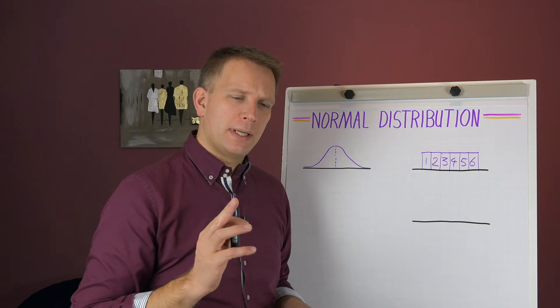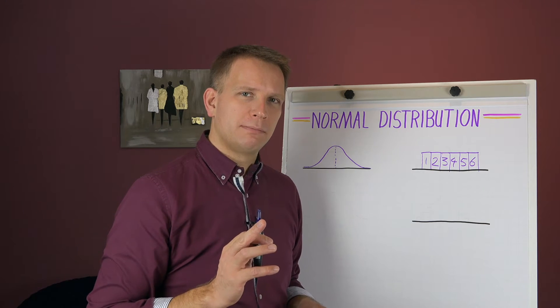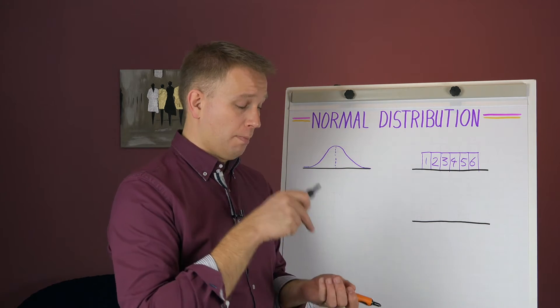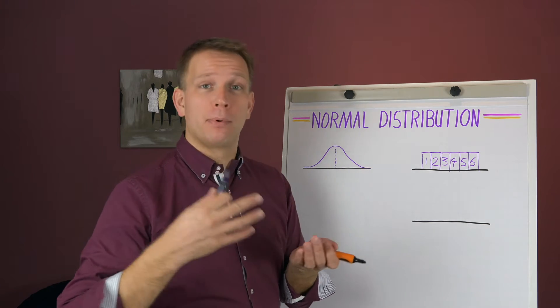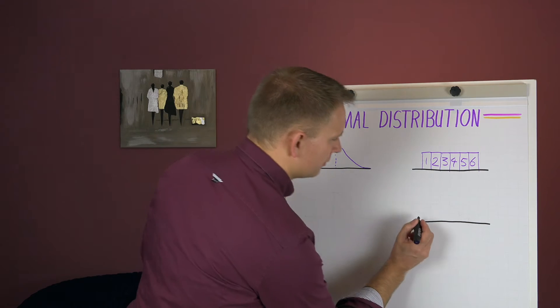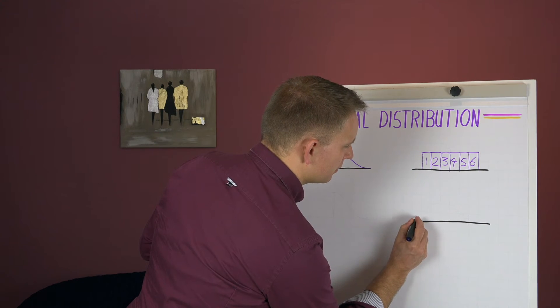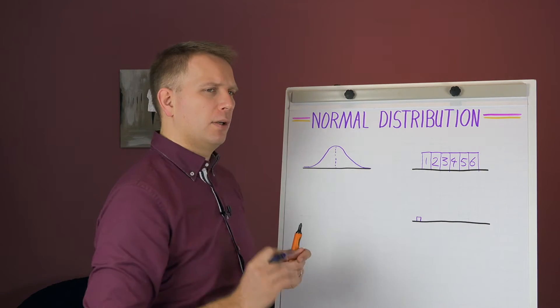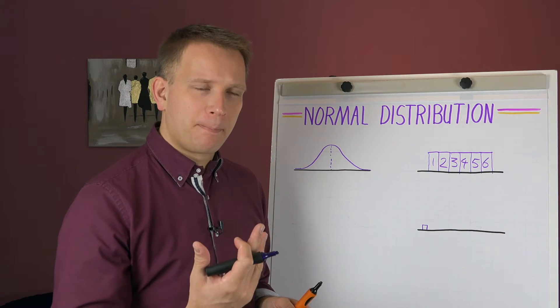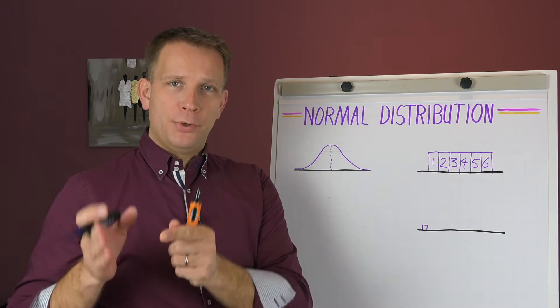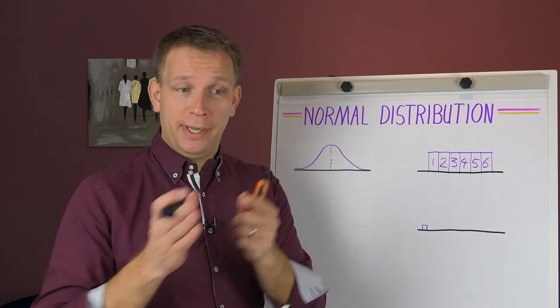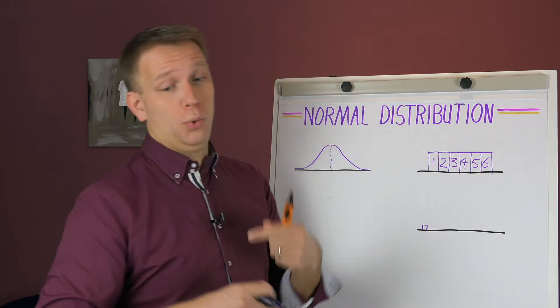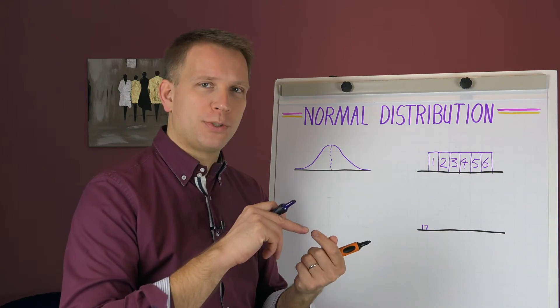But they follow a bit of a different pattern. You see, there is only one way to roll a two. Both my dice need to come up as one. So there's only one chance. Now, to get a three, it can be that the first die comes up as a one and the second as a two, or the first as a two, the second as a one.